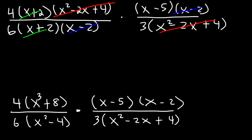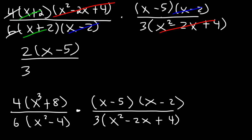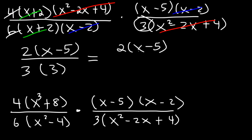4 over 6 reduces to 2 over 3, and we also have the other 3. So the final answer is 2 times x minus 5 divided by 9.